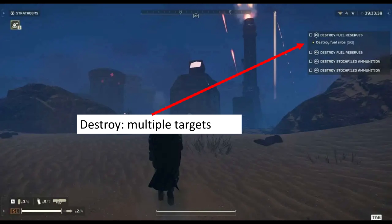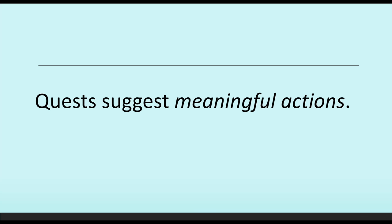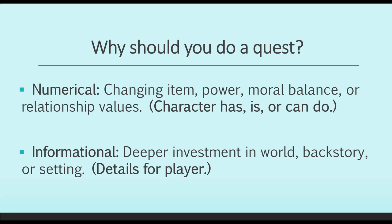So let's finally move on to the last part. We can impose structure, we can provide variety, and we can also suggest meaningful action. Players often make choices between quests — they might pick one quest over another based on what happens as a result. One of the four parts of a quest is the reward: what happens as a result. So if a player wants to make meaningful choices within their game, they often care what happens as a result. We can think about the meaningfulness of the actions within the quest as two general categories: there's generally a numerical change — changing the amount of items, the power, the moral balance, or relationship values — which we can think of as something a character has, is, or can do.